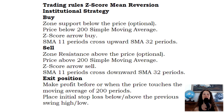Sell: Zone resistance above the price (optional). Price above the 200 Simple Moving Average. Z-score arrow sell signal. SMA 11 periods crosses downward the SMA 32 periods. Exit position.